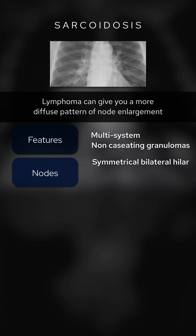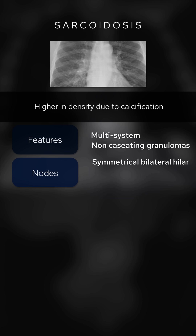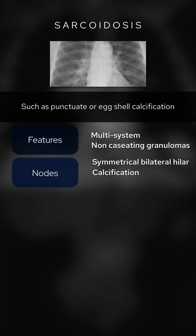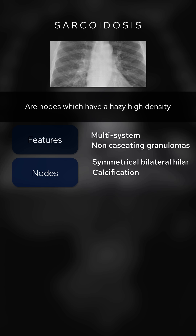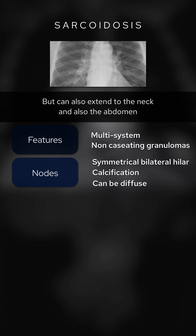Lymphoma can give you a more diffuse pattern of node enlargement, while TB classically affects the right hilum. The nodes in sarcoid can sometimes appear higher in density due to calcification, giving different patterns such as punctate or eggshell calcification. Something seen fairly regularly are nodes with a hazy high density, which always suggests sarcoid. Nodes aren't always limited to the chest but can extend to the neck and abdomen, making differentiation from lymphoma sometimes quite difficult.